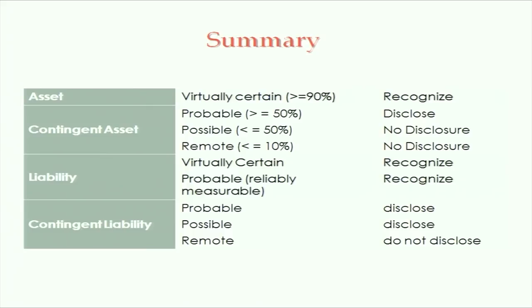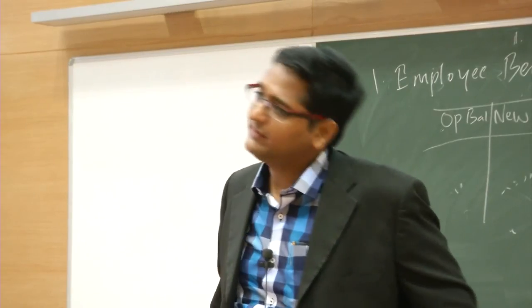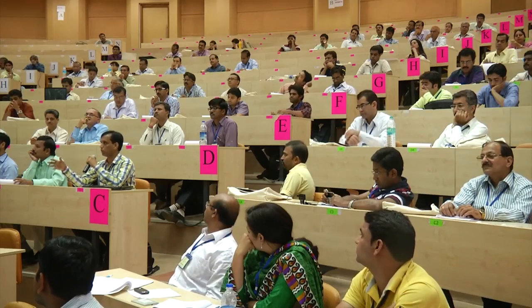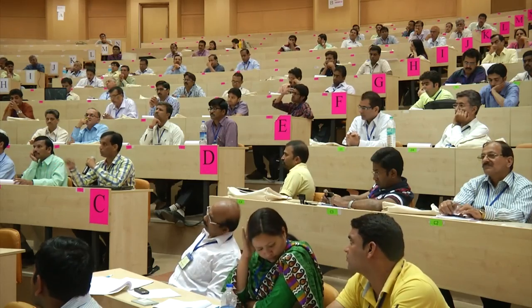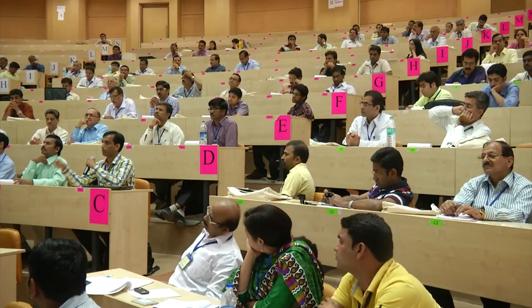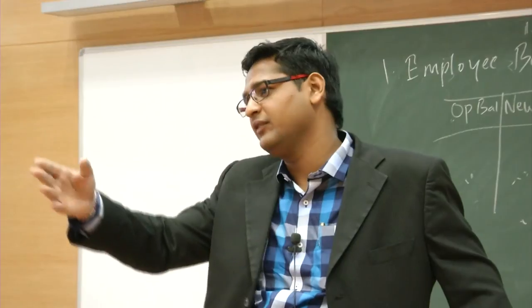For a liability — if it is virtually certain, recognize it; if probable and reliably measurable, still recognize it. For contingent liability: if probable, disclose; if possible, disclose; if remote, do not disclose. Liability can be converted to contingent liability only if the amount cannot be estimated at all — otherwise it is a liability. In a situation where a department lost in high court but has no intent to pay and files an SLP in Supreme Court, they can keep it as contingent liability for many years.